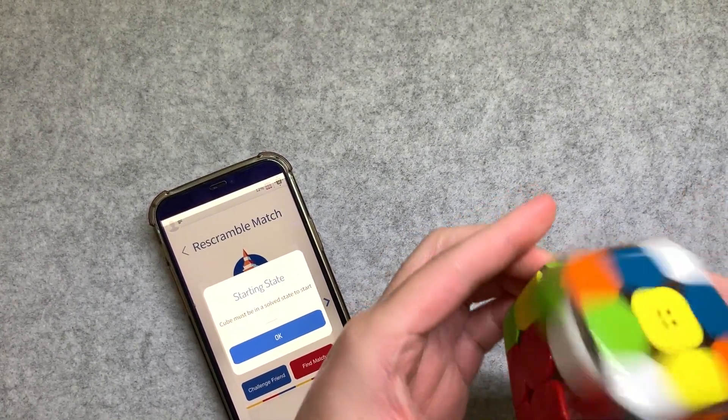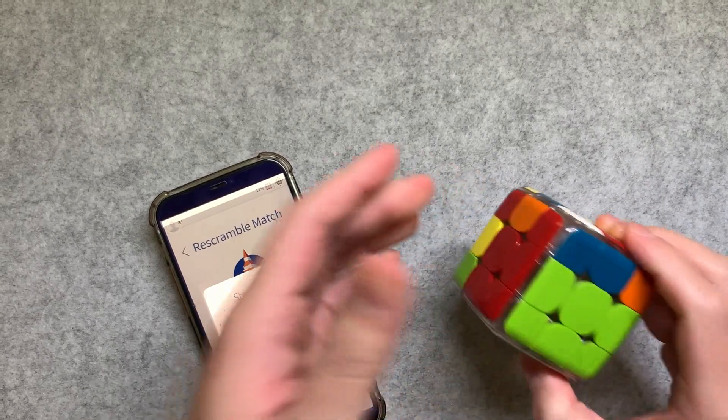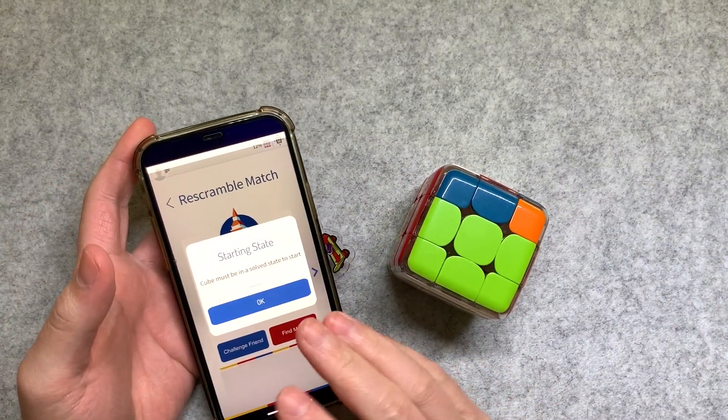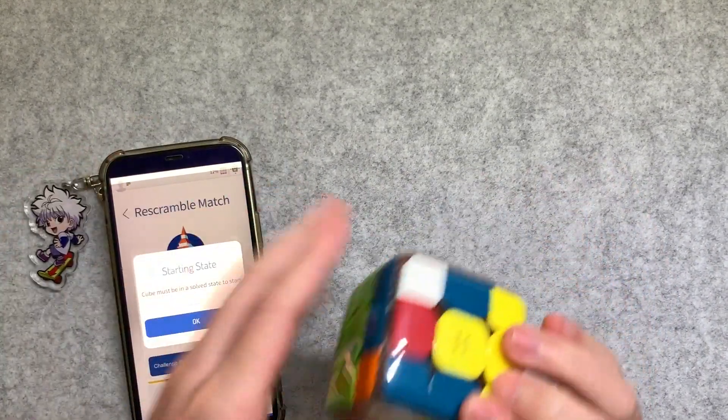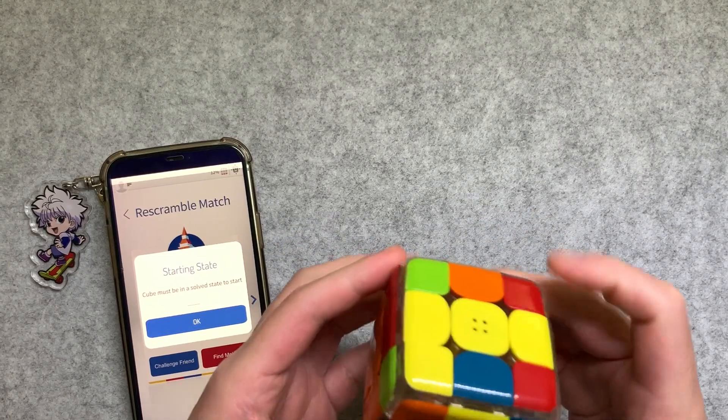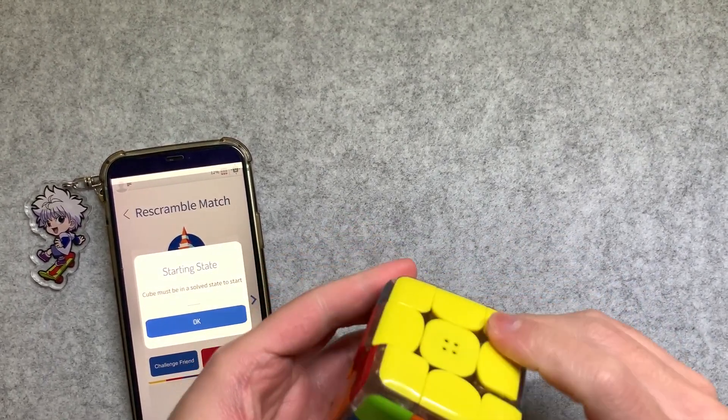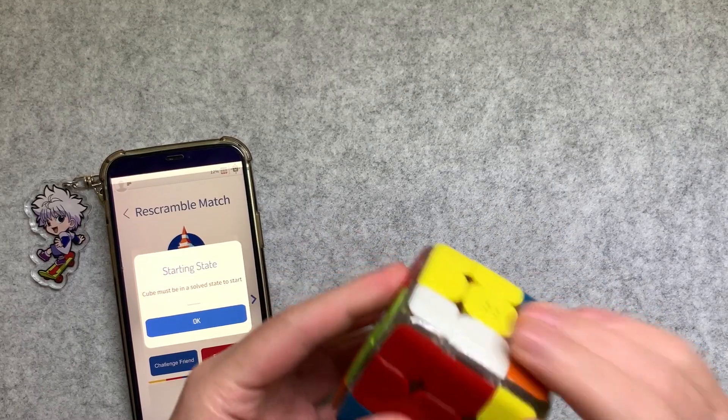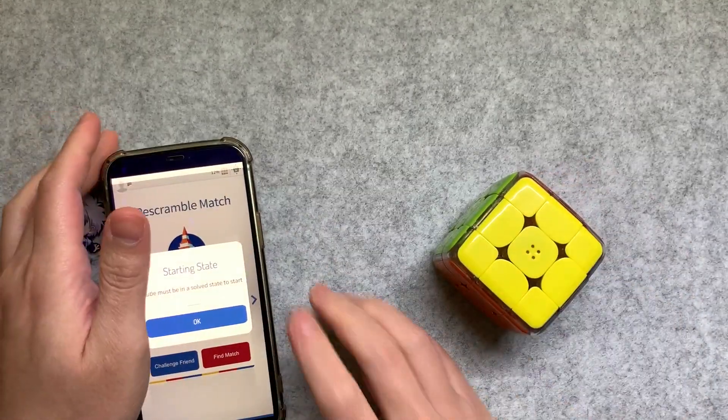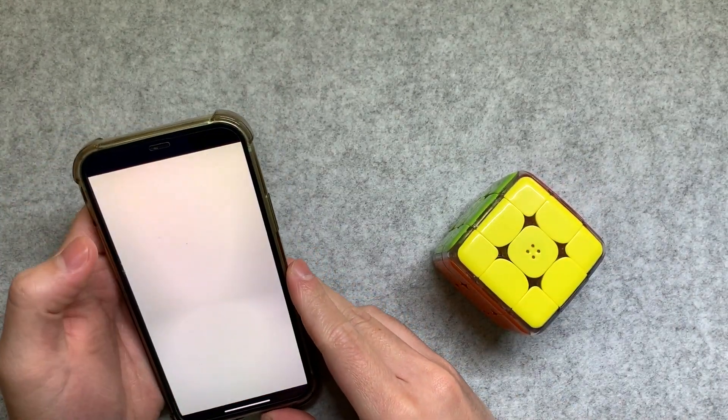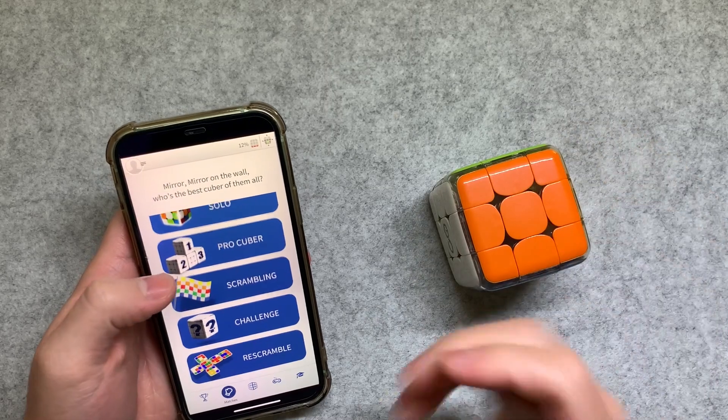Am I missing something? Guys put it in the comments if I'm missing something. But it seems like what you have to do with that game mode is they give you a scramble and your cube is solved, and you have to solve your cube into that scramble. Which I don't know. But just comment below if I'm doing something wrong, but that seems really hard.